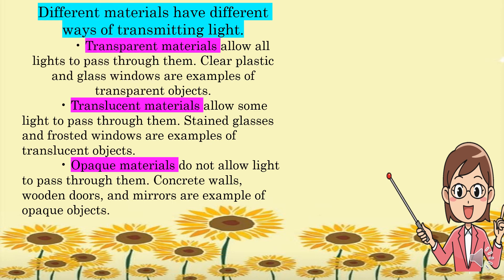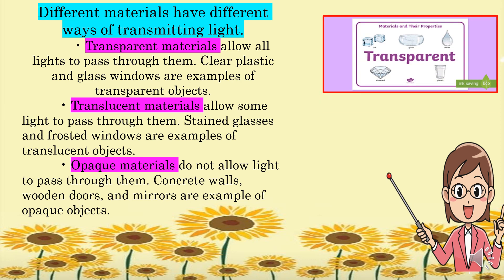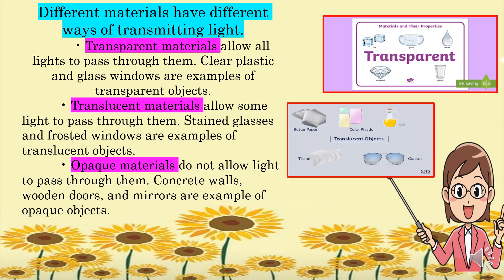There are different materials that have different ways of transmitting light. First, transparent materials allow all light to pass through them. Clear plastic and glass windows are examples of transparent objects. Translucent materials allow some light to pass through them — stained glasses and frosted windows are examples of translucent materials.